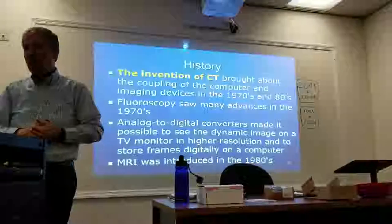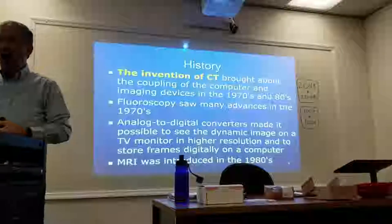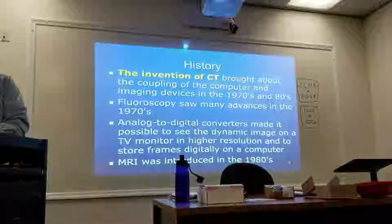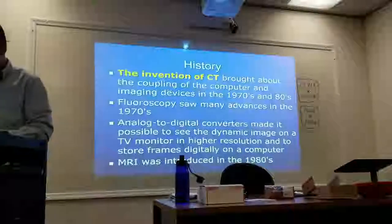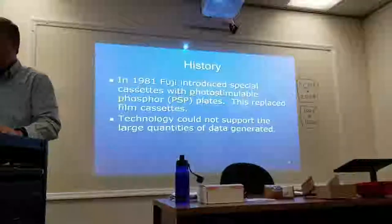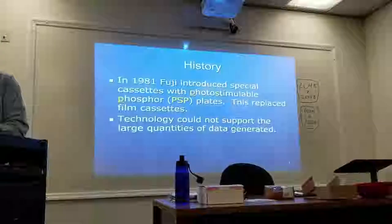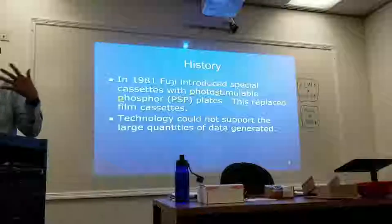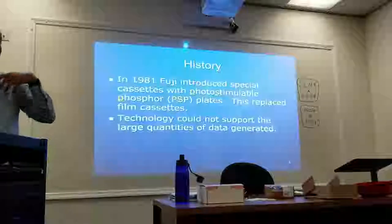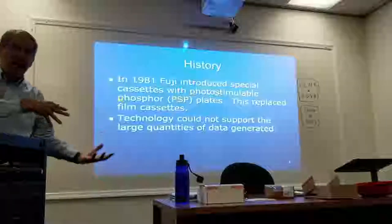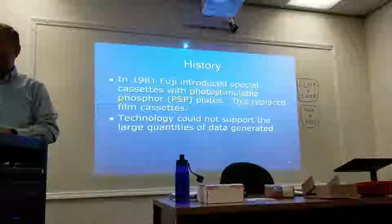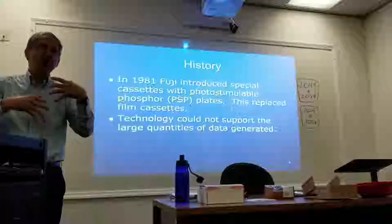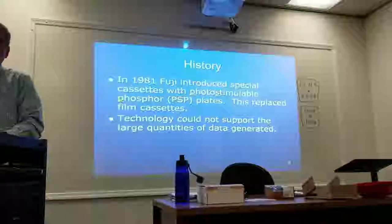Range is really the key thing, but it was really CT and all the advances there that really set the stage for CR and DR. In 1981, Fuji introduced special cassettes with the photostimulable phosphor, and that is what got the image plates going and replaced all the film cassettes, because technology just couldn't support what was going on before.